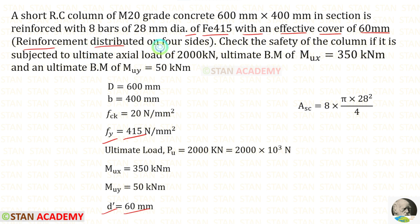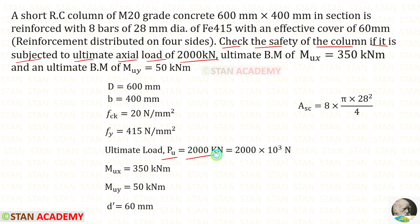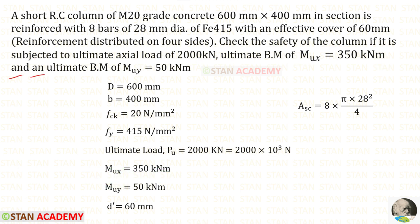Reinforcement is distributed on four sides. Check the safety of the column if it is subjected to an ultimate axial load PU of 2000 kN, an ultimate bending moment MUX of 350 kN·m, and an ultimate bending moment MUY of 50 kN·m.